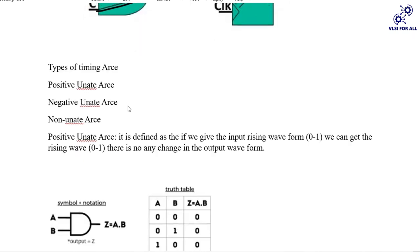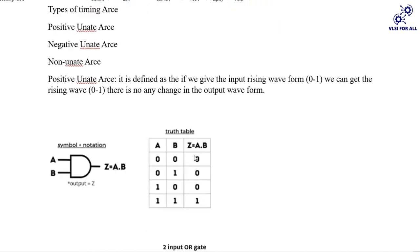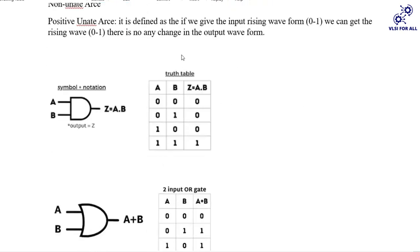Positive unate arc — what happens? If we give the input rising from 0 to 1, we will get the output the same. There is no change in the output; we will get the same output. If we are given rising input, we will get the rising output only.